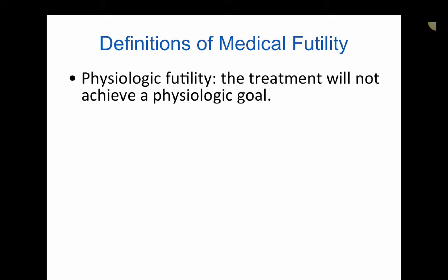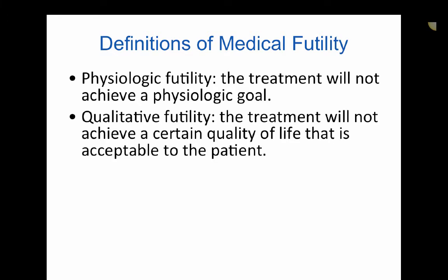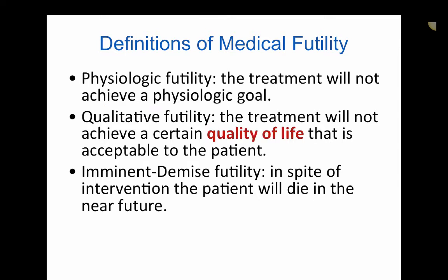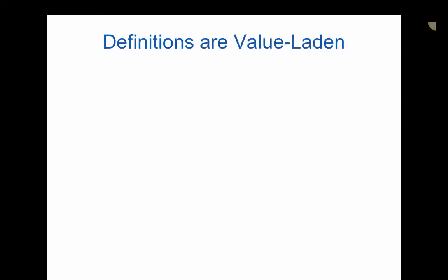There is physiologic futility, which refers to treatment that will not achieve a physiologic goal. There is also qualitative futility, which refers to treatment that will not achieve a certain quality of life that is acceptable to the patient. And then there is imminent demise futility, where, in spite of an intervention, the patient will die in the near future. But what time frame is specified when we say a treatment will not achieve a physiologic goal? How does one define quality of life? And how do we define the near future?